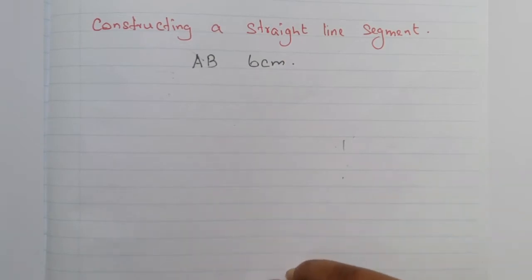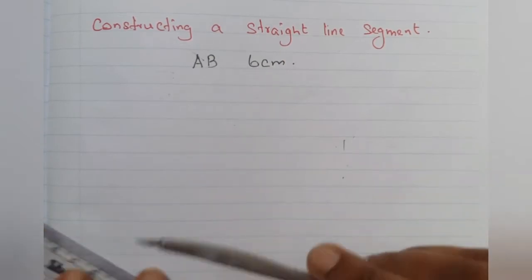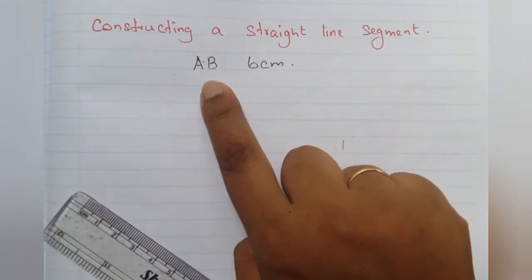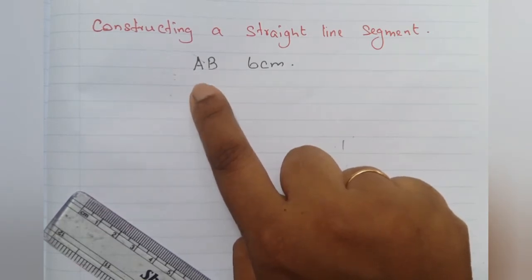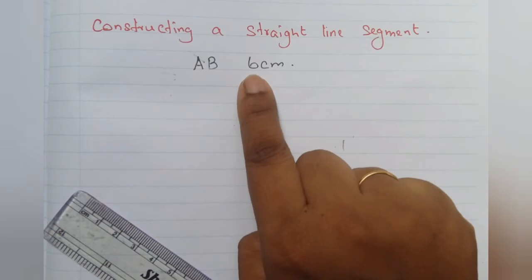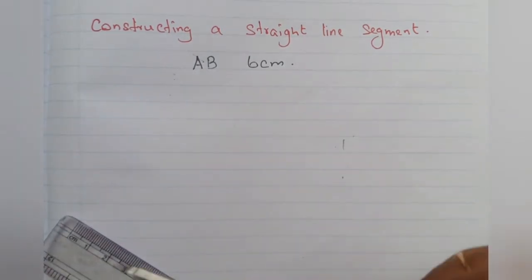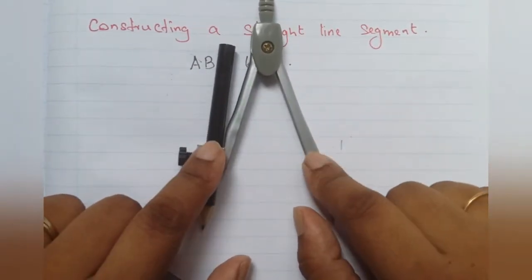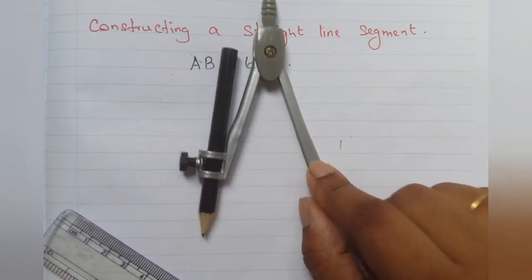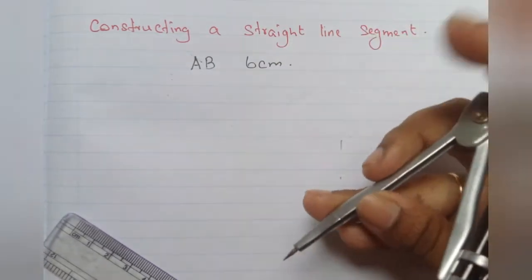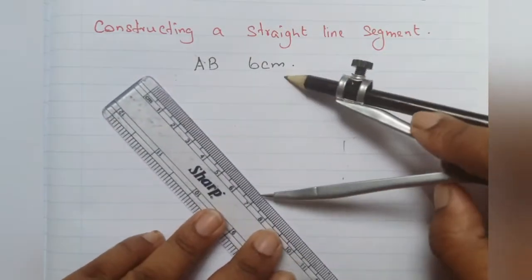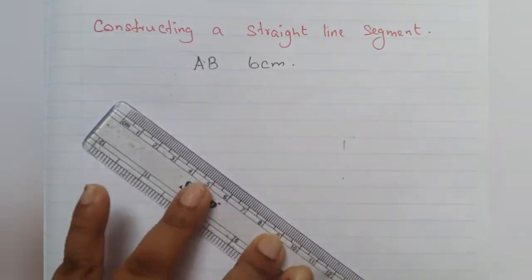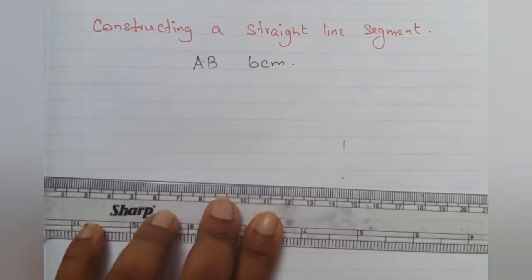The first topic is constructing a straight line segment. A straight line can be named with any two capital letters. Here I will be drawing a straight line AB measuring 6 centimeters. In Grade 7 you will be using the instrument known as a compass. We are going to use a compass and a ruler to draw this straight line.